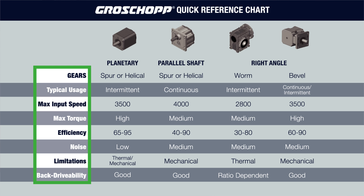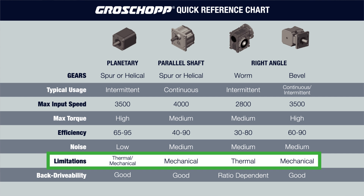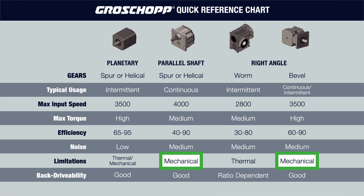We need to explain the criterion we've labeled limitations, as we'll see in later videos this will be important in making reducer selections. In general, the output torque of a gearbox is either mechanically or thermally limited. For example, if you look at the limitations for parallel shaft and bevel right angle reducers, you can see they are limited in output torque by the mechanical wear on components.